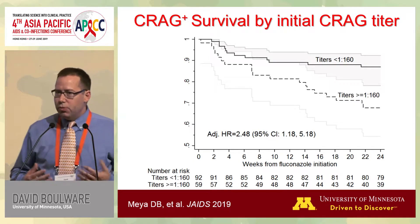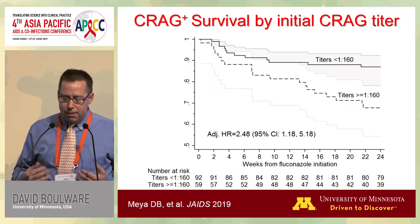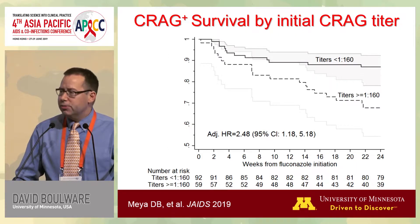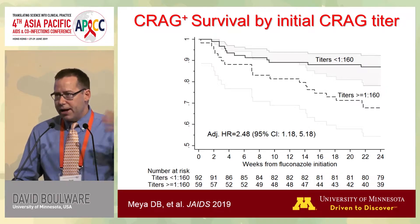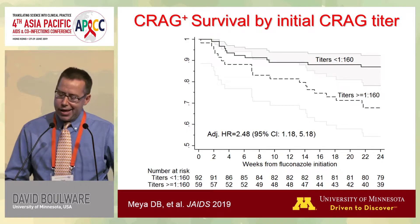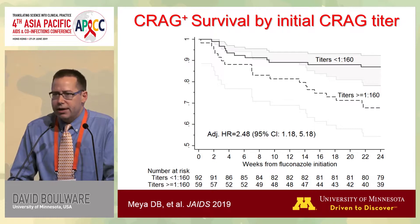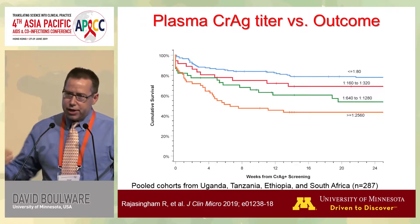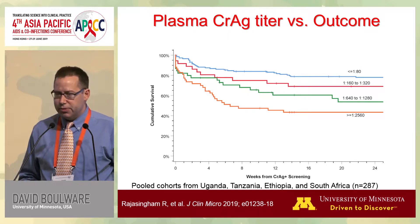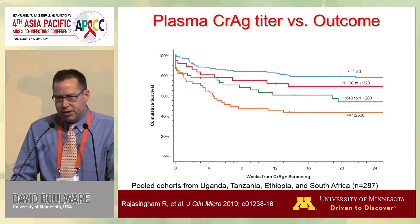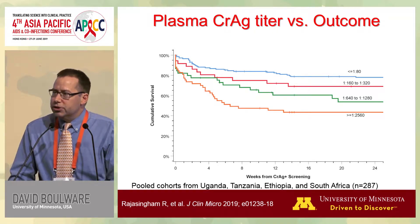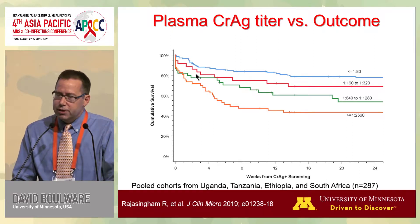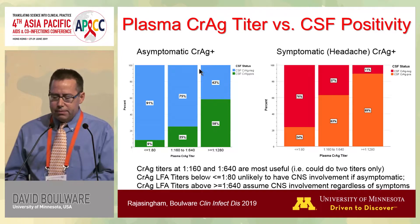One key finding from the trial was that the baseline CrAg titer is quite informative of risk of death or meningitis over the next six months. The threshold was around 1:160 — at or above that, the risk of death was about two and a half times higher. When titers were 1:80 or lower, mortality risk was about 10%, the same as CrAg-negative patients. This titer-mortality relationship has been seen across multiple pooled cohorts: as titer goes up, mortality risk goes up as well.